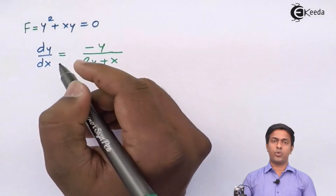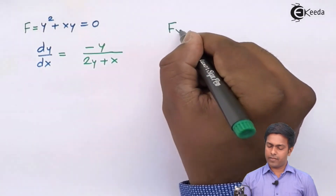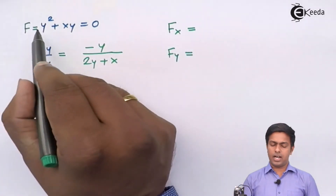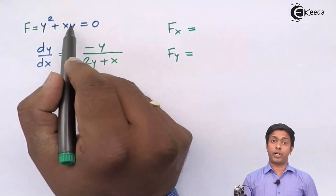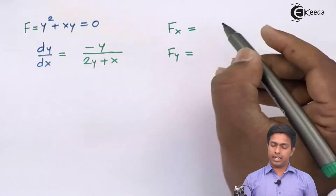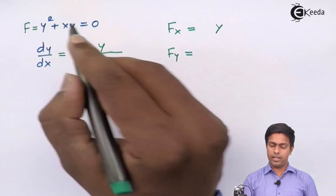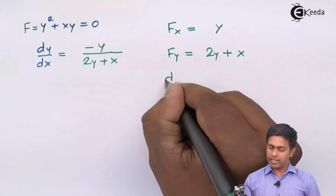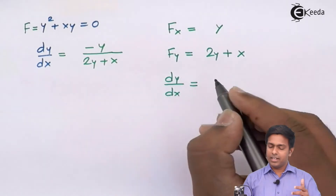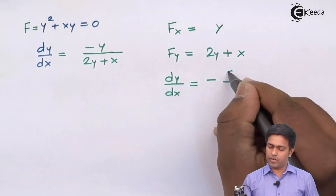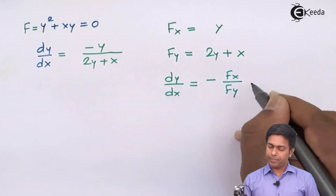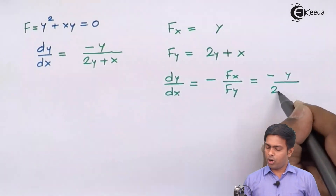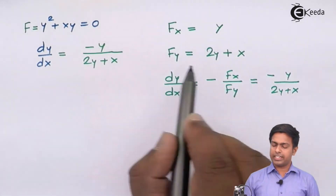Differentiating f = y² + xy partially with respect to x (treating y as constant): y² gives 0, and xy gives y, so fx = y. Differentiating with respect to y: y² gives 2y, and xy gives x, so fy = 2y + x. Applying the formula: dy/dx = −fx/fy = −y/(2y + x). You can see we get the same answer! The formula method is faster, especially for more complex functions.